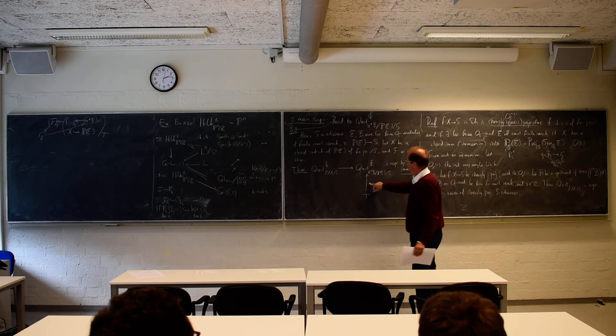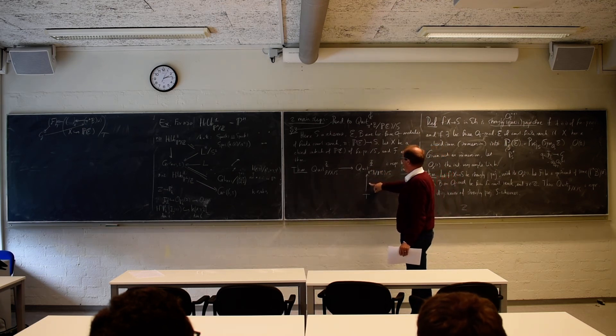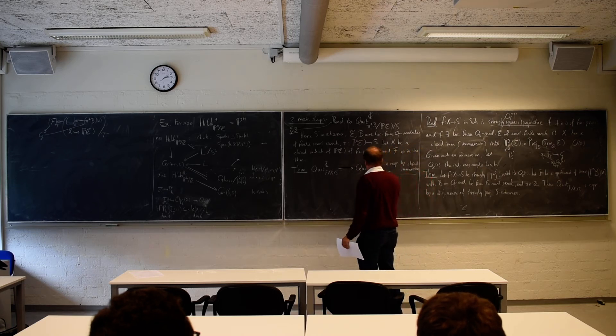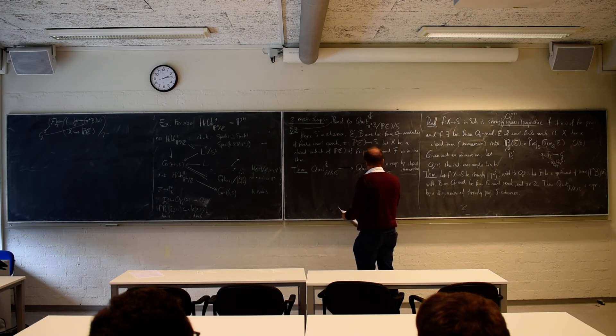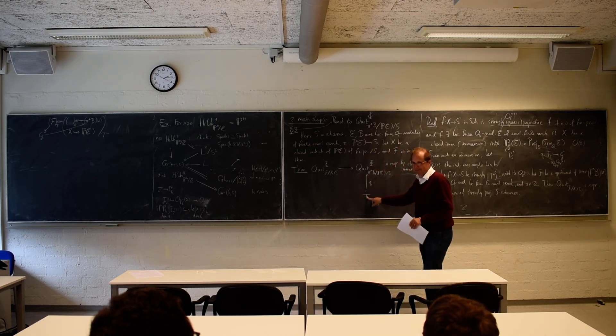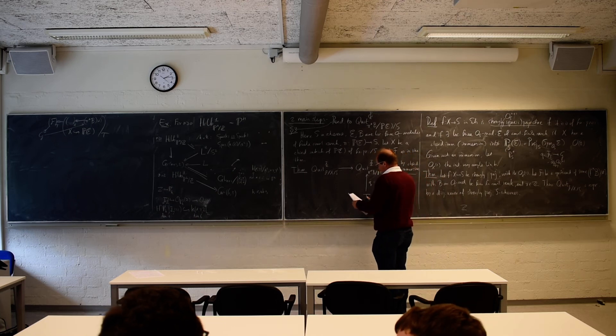So that means that if you take a scheme T, and you remember Yoneda, right? Yoneda says the category of schemes is embedded in the category of contravariant functors from schemes to sets. This is such a functor. So T is also... Yeah, it's the whole functor to T. And if I have an arrow like this, the Yoneda lemma says to give a morphism of functors from T to that, it's the same as to give a... To release this functor on T.